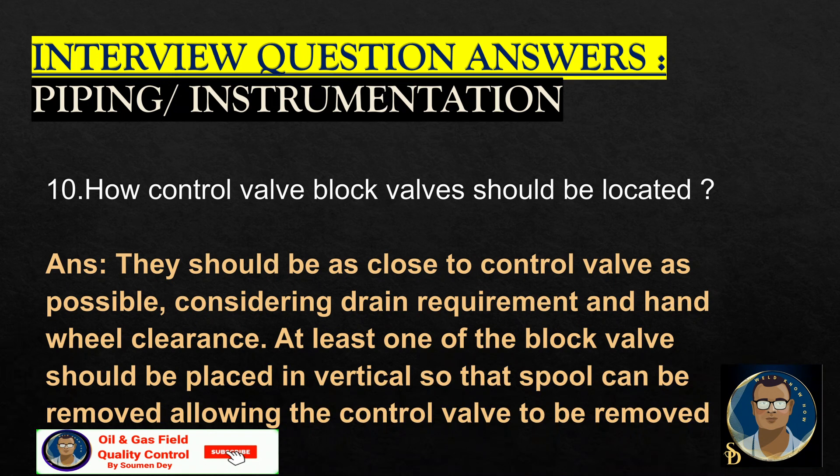They should be as close to the control valve as possible, considering drain requirements and handwheel clearance. At least one of the block valves should be placed in a vertical position so that the spool can be removed, allowing the control valve to be removed.